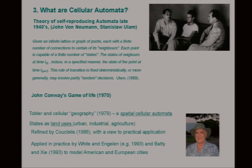This rule of transition is fixed deterministically, or more generally may involve partly random decisions. There's a lot of talk in the land use modelling literature about transition rules, states, and neighbours — and all of it comes back to this. Then there were experiments by mathematicians like John Conway, who came out with The Game of Life, which is a classic example if you know anything about cellular automata.